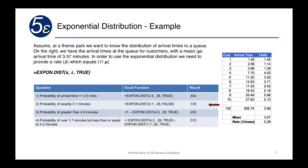The probability of exactly 3.1 minutes uses EXPON.DIST(3.1, 0.28, FALSE), giving a 13 percent probability. For the probability of greater than 4.9 minutes, we do one minus EXPON.DIST(4.9, 0.28, TRUE), which gives 0.253 — a 25.3 percent probability.